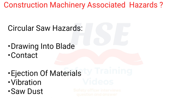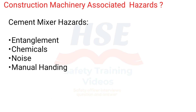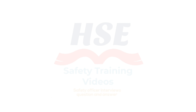Construction machinery associated hazards. Circular saw hazards: drawing into blade, contact, ejection of materials, vibration, saw dust. Cement mixer hazards: entanglement, chemicals, noise, manual handling.